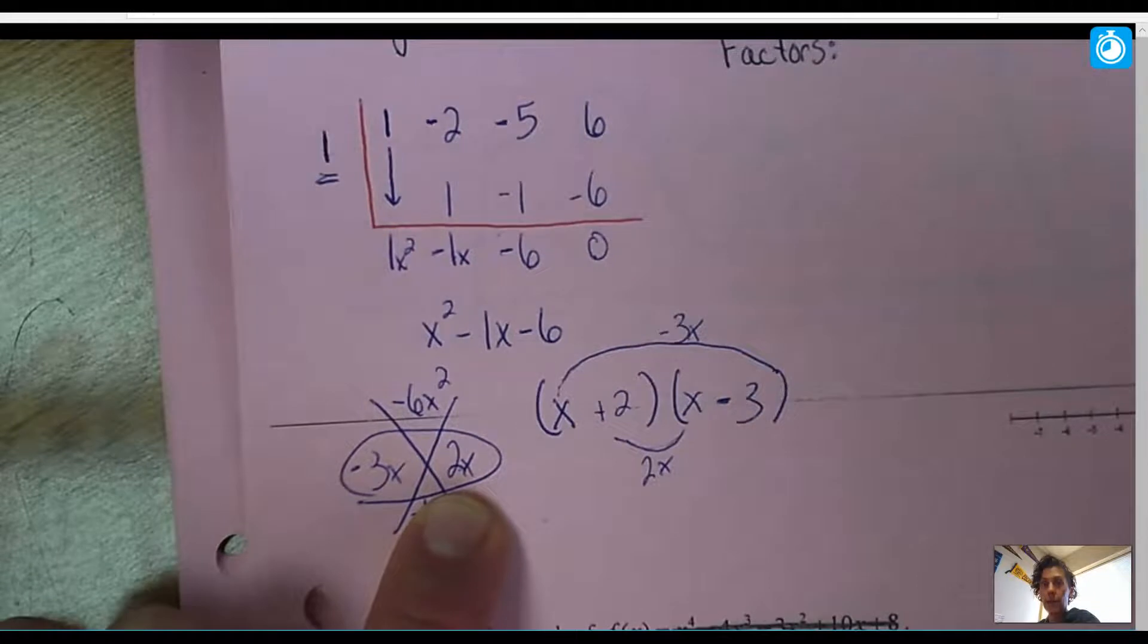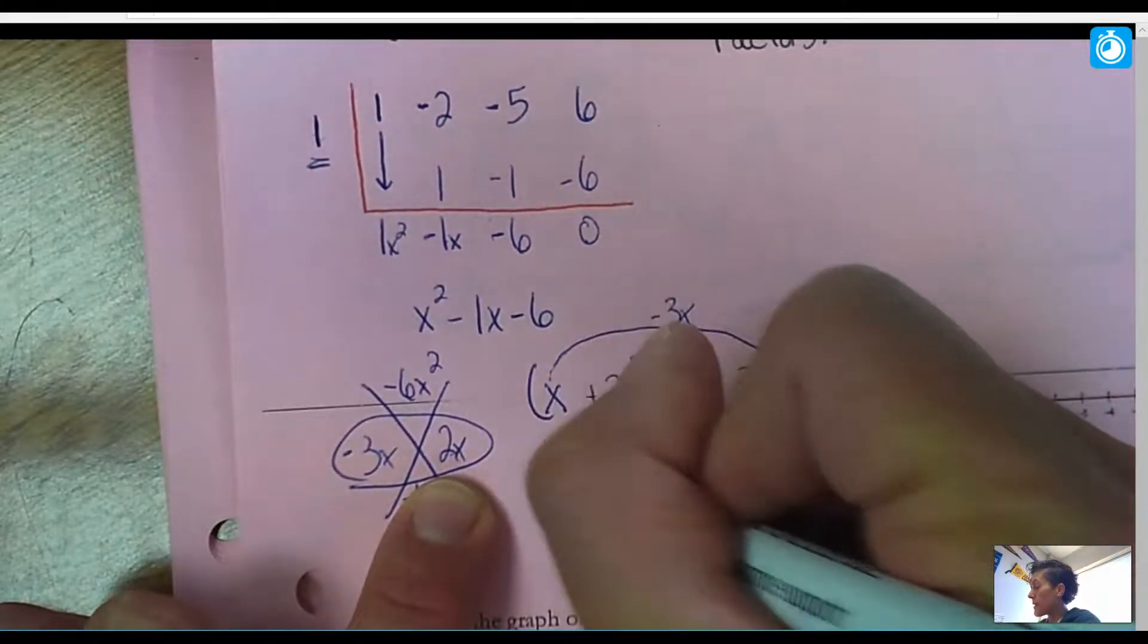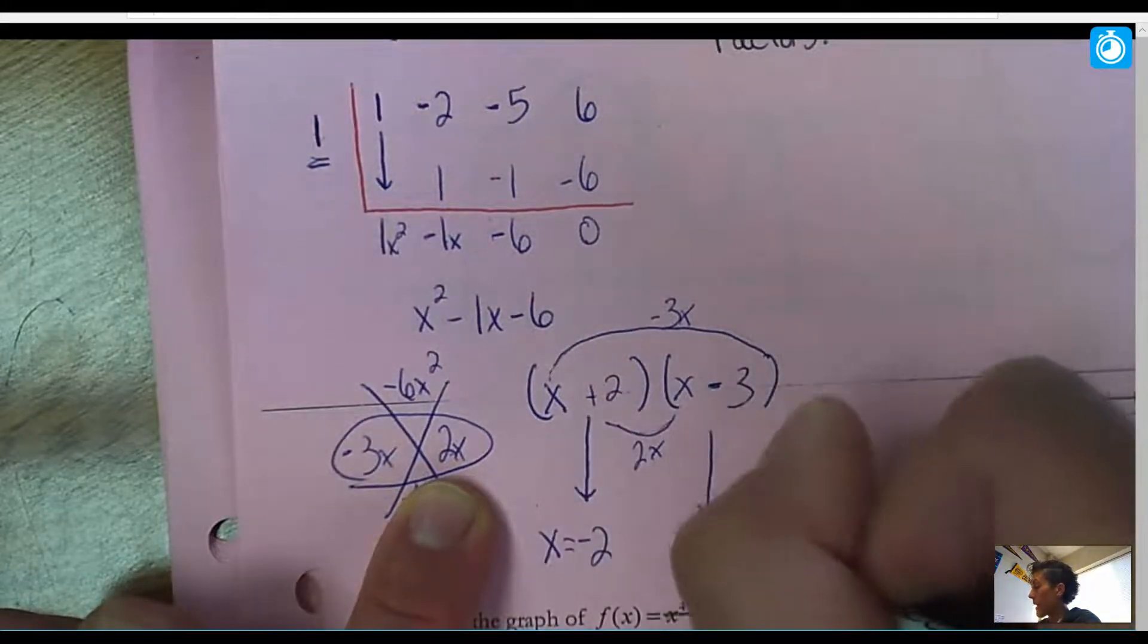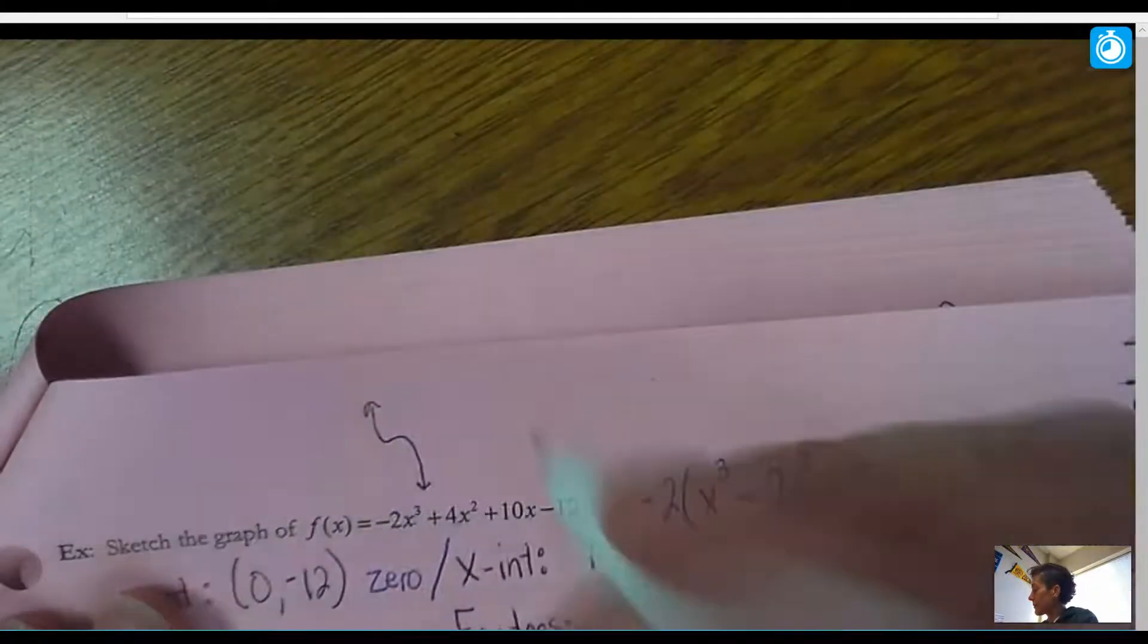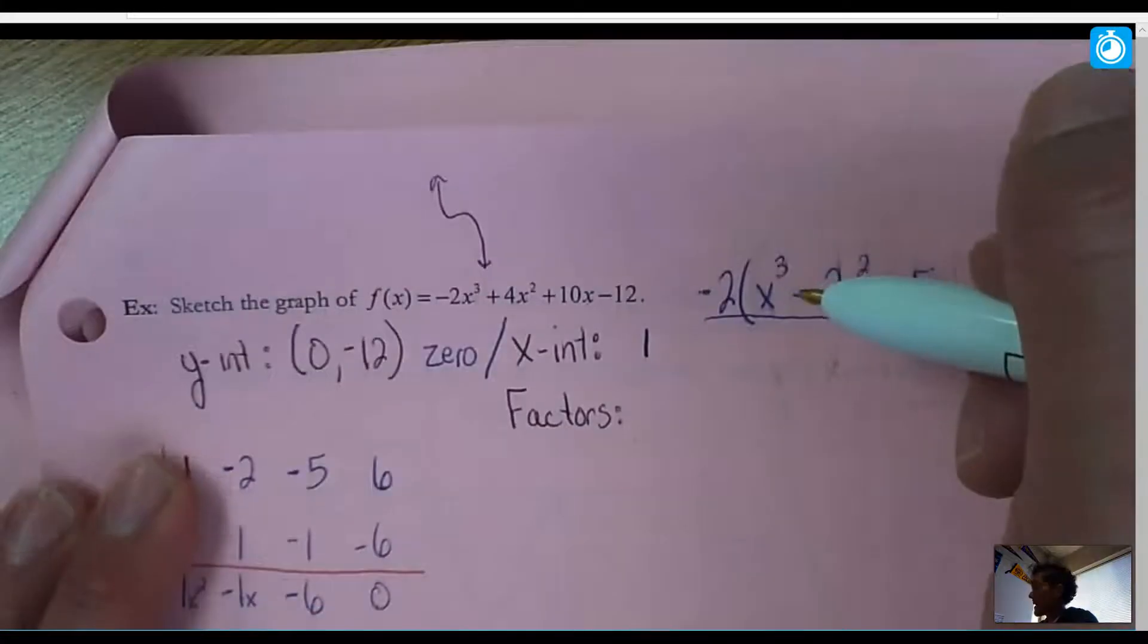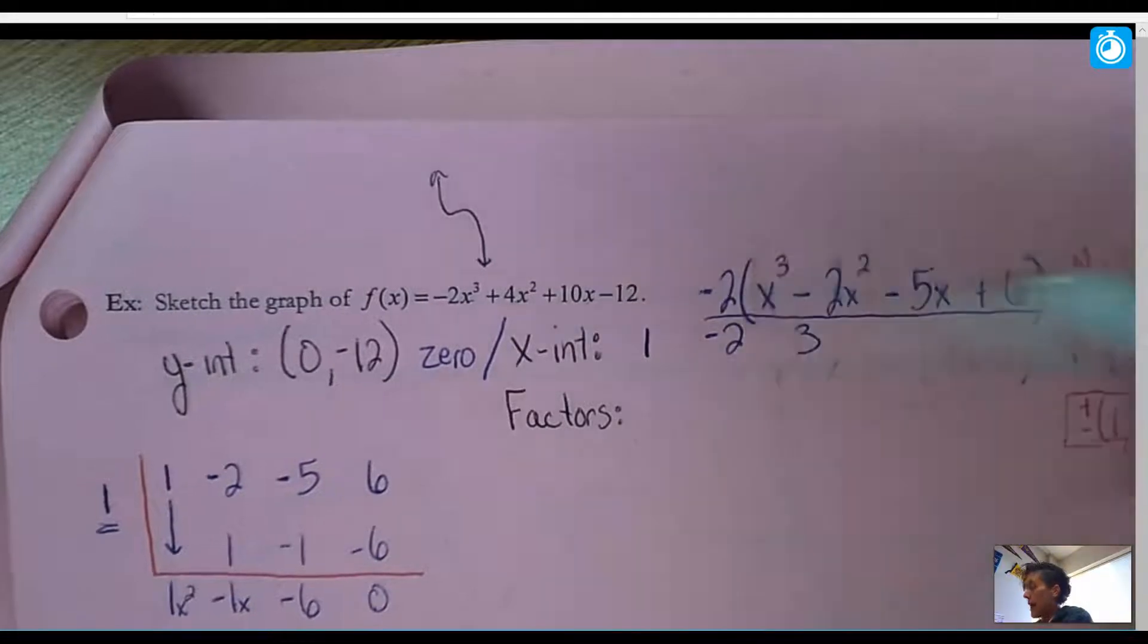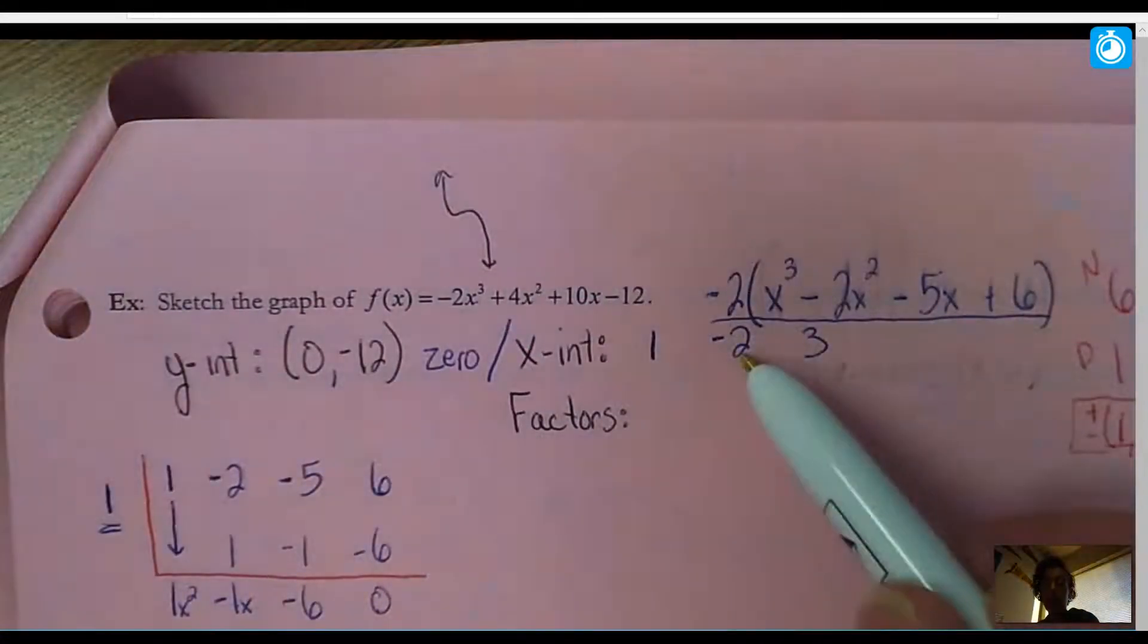And now I've got my factors. And so I can set them equal to 0, and I would solve. So when I would set this one equal to 0, I just get negative 2. And when I set this one equal to 0, I get 3. So now I can add to my x-intercepts. I can add to my 0s. In addition with 1, I can add the negative 2 and a 3. And remember, I was supposed to have three answers according to that. And I do. Here's 1. Here's 2. Here's 3.